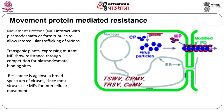Plant viruses encode movement proteins that facilitate them to spread the virus locally and systemically by modifying the gating function of the plasmodesmata. The viral movement includes plasmodesmata, the channels that extend through plant cell walls. A transgenic plant that expresses mutated movement protein may show resistance to viruses through competition for plasmodesmatal binding sites, and thus provide resistance against the targeted virus. In addition, the movement protein mediated resistance strategy yielded broad spectrum resistance by interfering with the spread of distantly related and unrelated viruses.